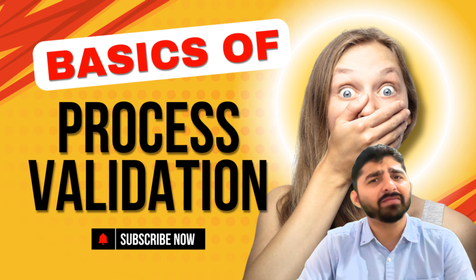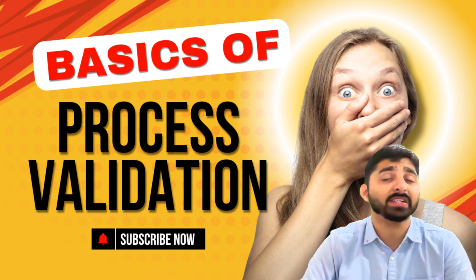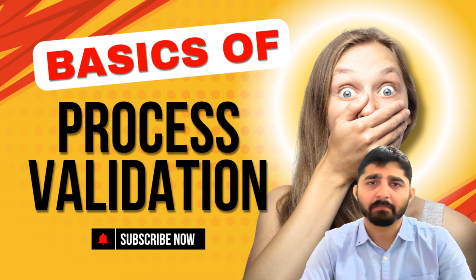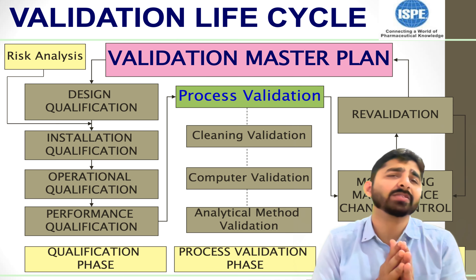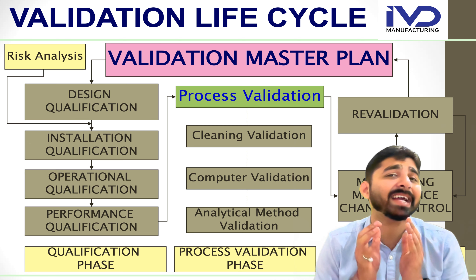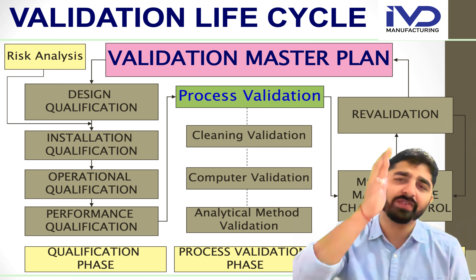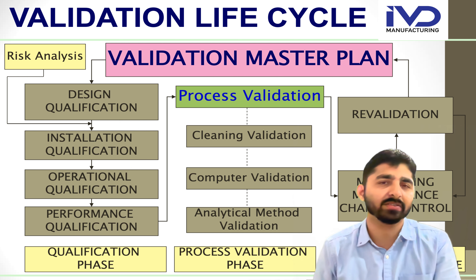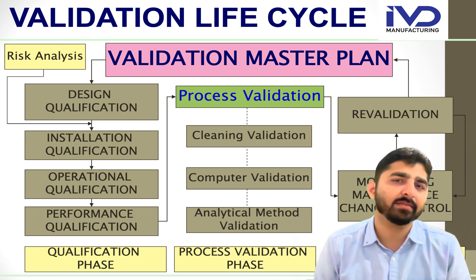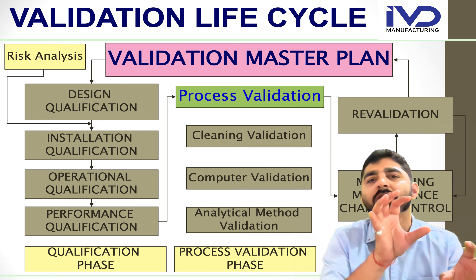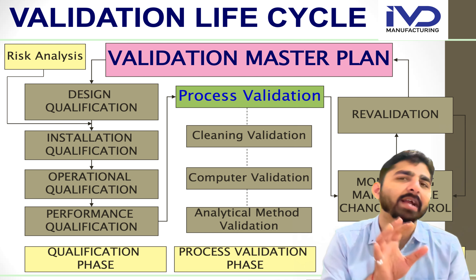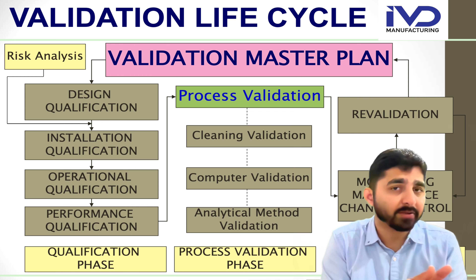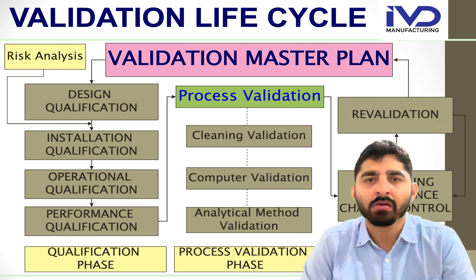Now let's talk about the validation life cycle, which is governed by the Validation Master Plan, or VMP. Any organization or company needs to stick to this plan. In the VMP, there are mainly three categories: the first includes all the qualification activities, the second covers the validation activities, and the third covers the revalidation phases. Within the VMP, there are four key phases: risk analysis, the qualification phase, the process validation phase, and the validation maintenance phase.